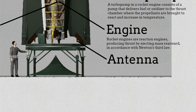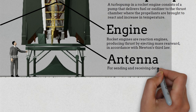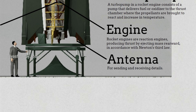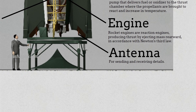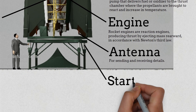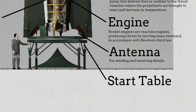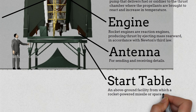Antenna — for sending and receiving details. Start table — an above-ground facility from which a rocket-powered missile or space vehicle is vertically launched.